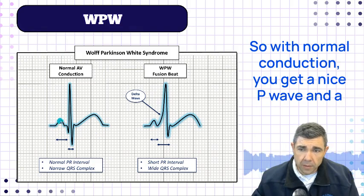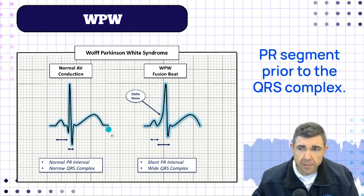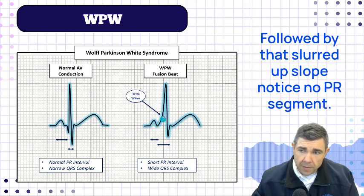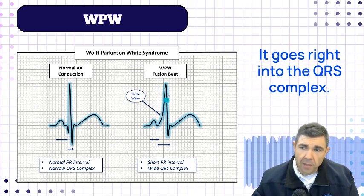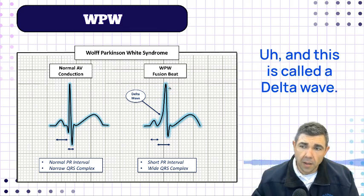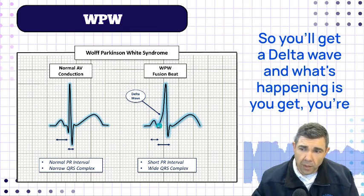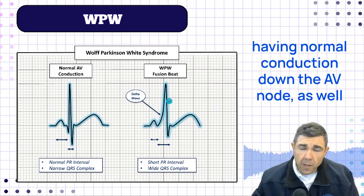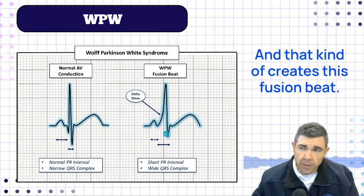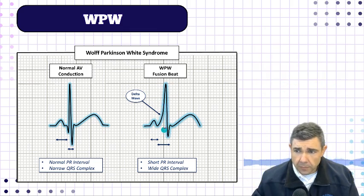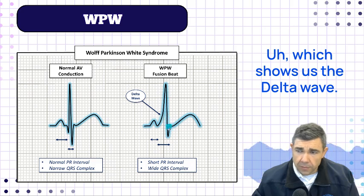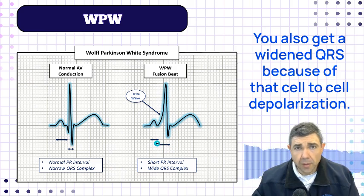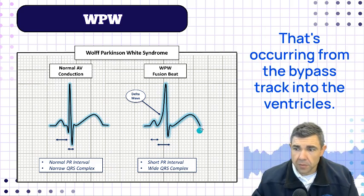With normal conduction, you get a nice P wave and a PR segment prior to the QRS complex. With WPW, you have a P wave followed by that slurred upslope — notice there's no PR segment, it goes right into the QRS complex. This is called a delta wave. What's happening is you're having normal conduction down the AV node as well as conduction down the accessory pathway, creating a fusion beat that shows us the delta wave and a widened QRS due to cell-to-cell depolarization from the bypass track into the ventricles.